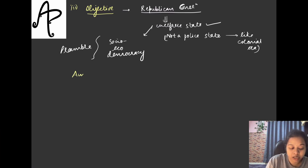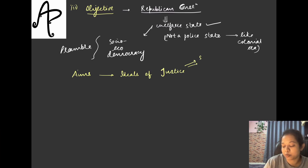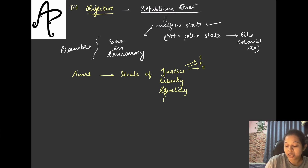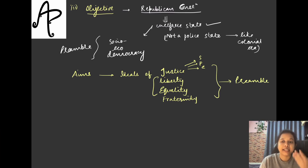The directive principles also aim to realize the ideals outlined in the Preamble. We have talked about the ideals of justice — social, political, and economic — along with liberty, equality, and fraternity. Liberty and equality are highly dealt with in fundamental rights, but from a political angle. The Preamble outlines all these ideals, and the directive principles aim and move in that same direction regarding socio-economic dimensions.